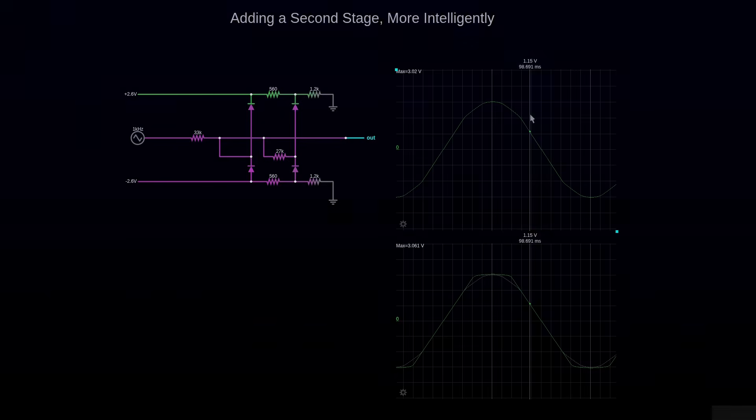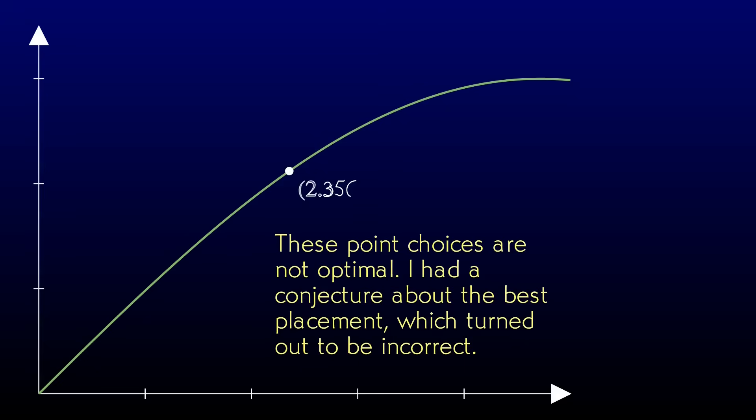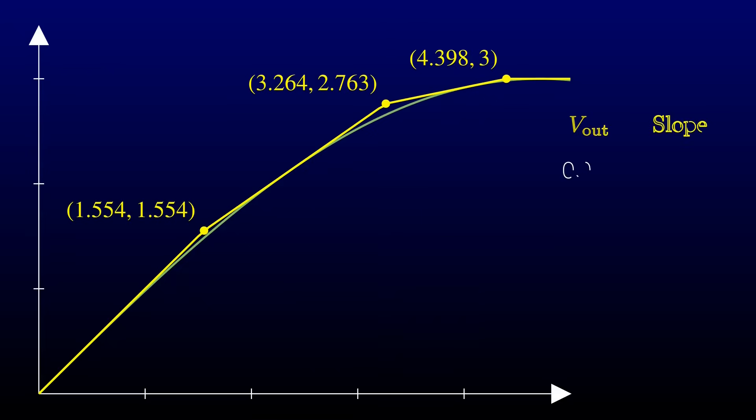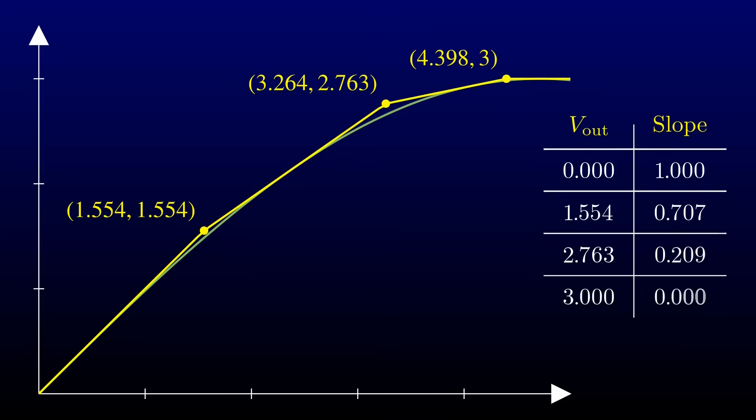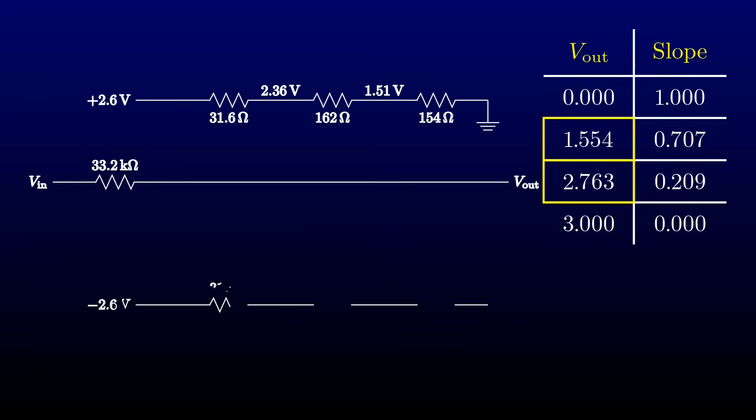Shall we try three? We go through the same procedure as before, only now we choose two intermediate points on the sine wave. We draw the tangent lines to the sine curve at those points, compute the points of intersection, and tabulate the output voltages where the slopes change and the slopes of the segments.